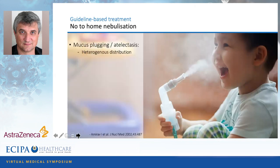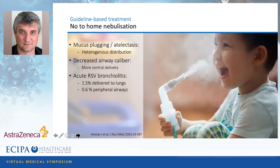Why not home nebulization? The problem is inside the airway — not bronchoconstriction. There's mucus plugging and impaired mucus clearance. If you nebulize anything, there will be a heterogeneous distribution and it won't reach the target receptors. We're dealing with small airways, so nebulizing only delivers medication to the central bigger airway. A study by Amirath specifically in acute RSV bronchiolitis showed that only 1.5% of medication from a nebulizer is delivered to the lungs, and only 0.6% to the peripheral airways. Nebulizing these children is essentially very expensive entertainment that offers no benefit.